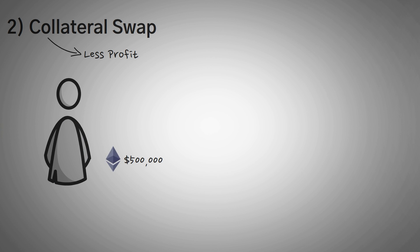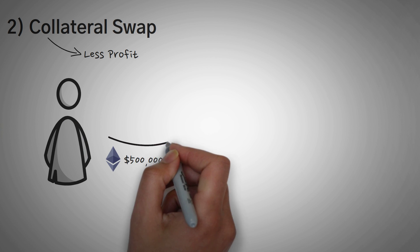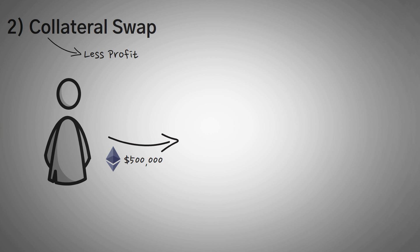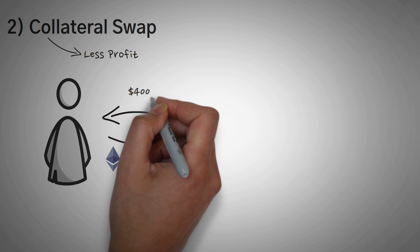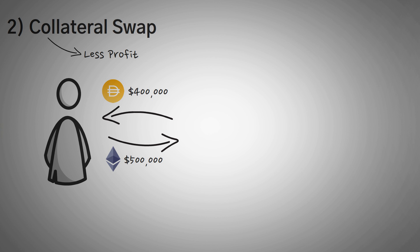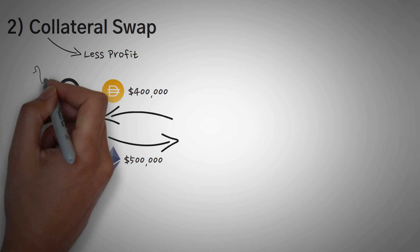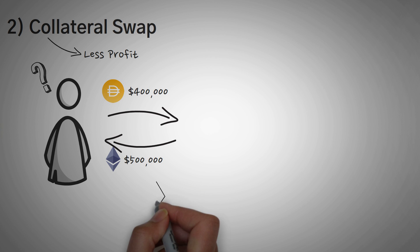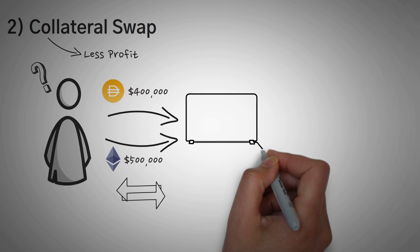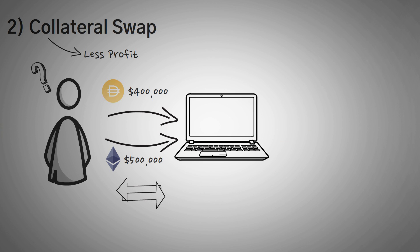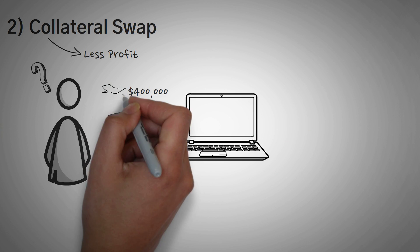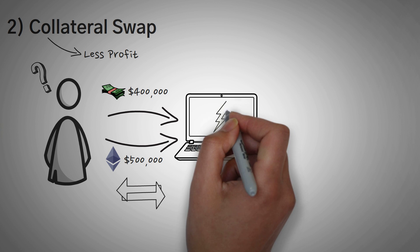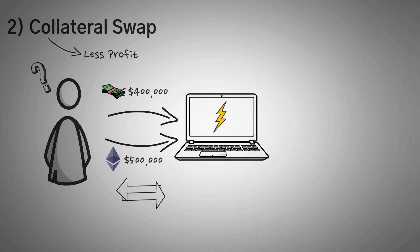Let's say you had half a million dollars in Ethereum that you were lending out to earn interest, and because of this you borrowed $400,000 of DAI, which is a stablecoin. Maybe you wanted to trade that ETH for something else. You would have to pay back your DAI to get access to your Ethereum, trade it to something else, deposit the new coin back into the lending platform, and then borrow back your $400,000. If you used a flash loan, you could do all of this at once instead of using multiple steps.